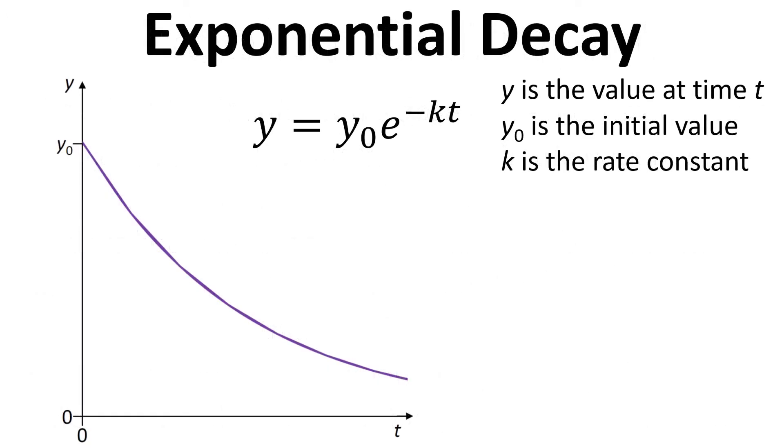So for exponential decay we have a graph like this where we have y dropping down and we have an equation y equals y zero e to the minus kt. So y is the value at time t, y zero is the initial value and k is the rate constant.